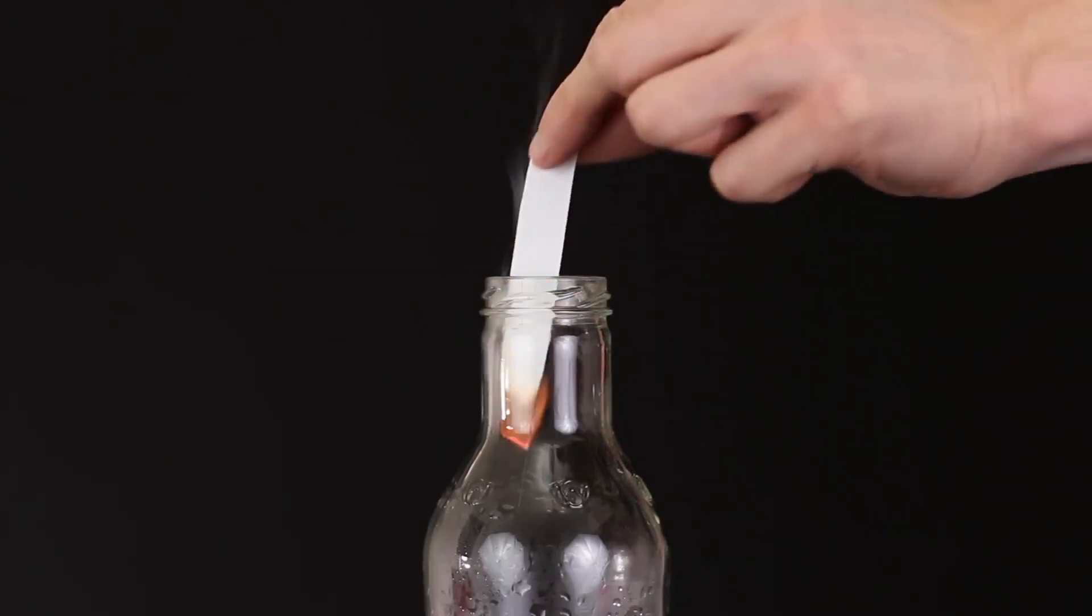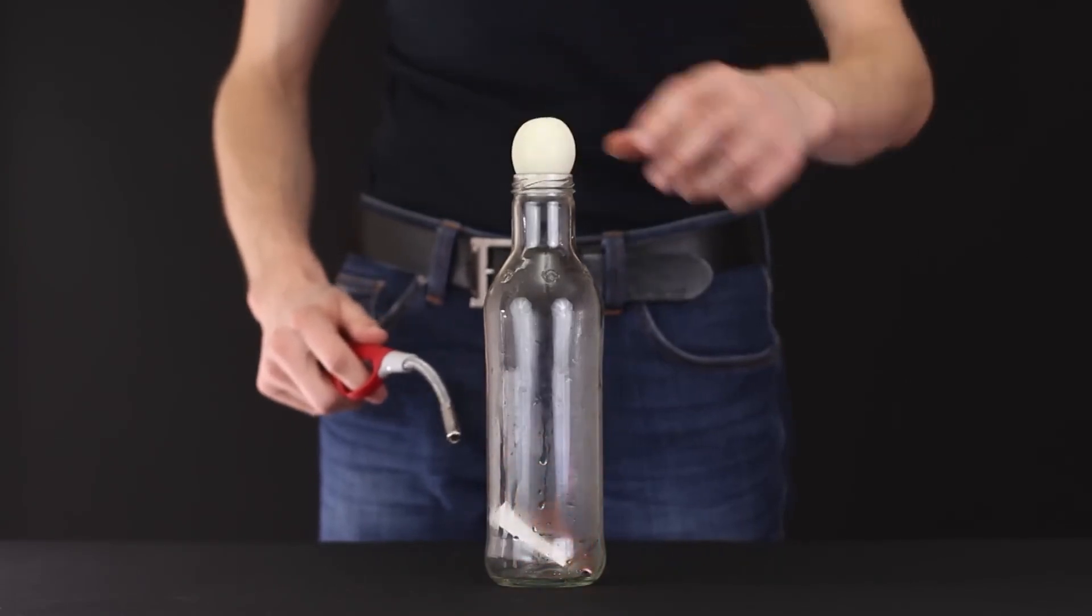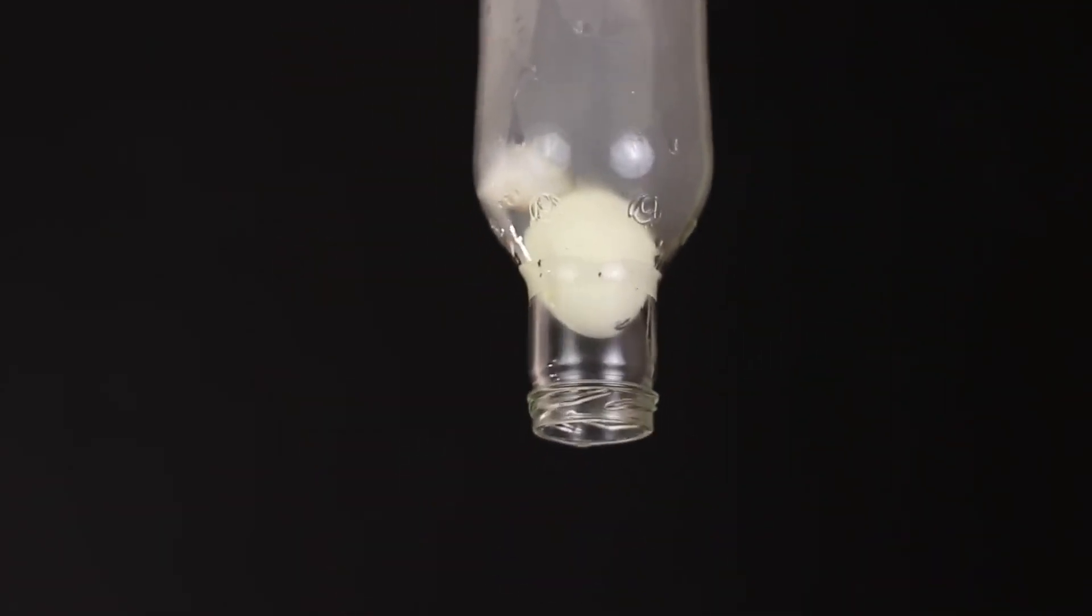The same trick can be done with the burning piece of paper. The fire will burn all the oxygen inside and the egg will be drawn inside even faster.